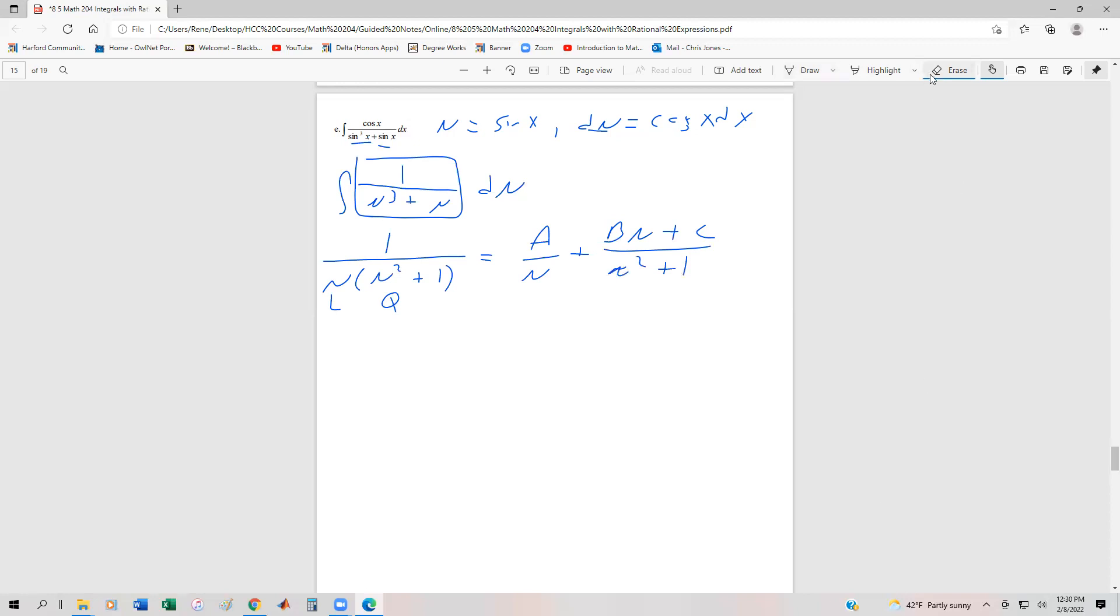We're going to multiply both sides by the common denominator and simplify it, and this actually works out really nicely, because once we multiply it through, we are going to have one. When we multiply both sides by u times u squared plus one, that cancels all this. The A is going to be multiplied by the u squared plus one, because that's what's missing in the denominator. And then Bu plus C is going to be multiplied by u.